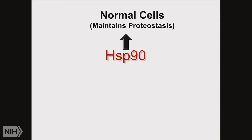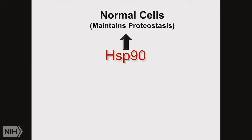In normal cells, HSP90 is in excess — it's thought to make up about 3% of the protein of a normal cell, which for one protein is a huge amount. It's not clear why it's in such excess, but it is. In cancer cells, it's much more difficult to maintain proteostasis because there are many stresses constantly impacting cancer cells trying to disrupt this process. Maintaining the proteostasis of cancer cells is much more difficult, and so HSP90 under these conditions is limiting — even though it's more highly expressed in cancer cells than in normal cells, at 5% or more.